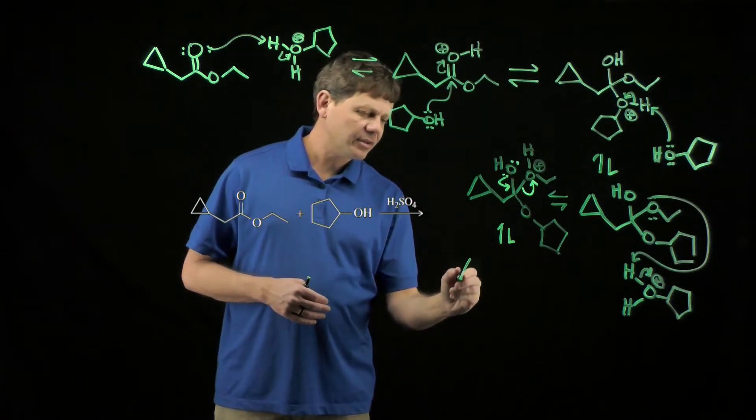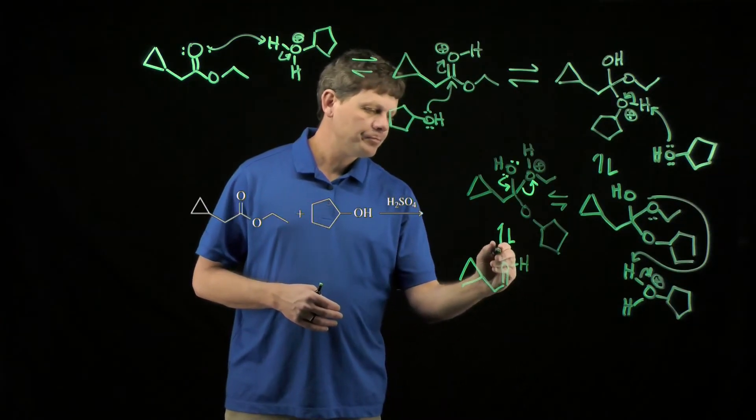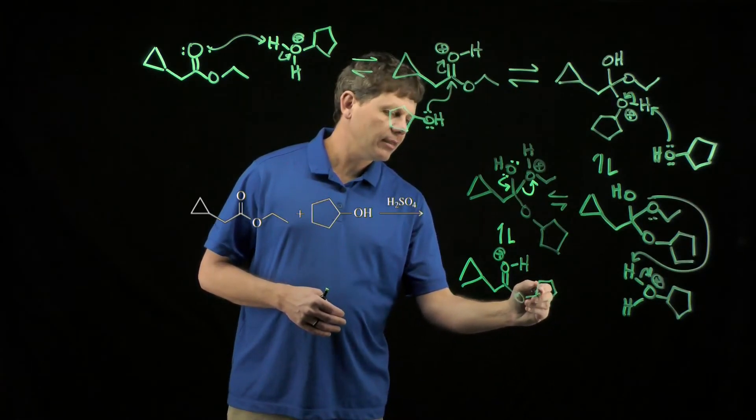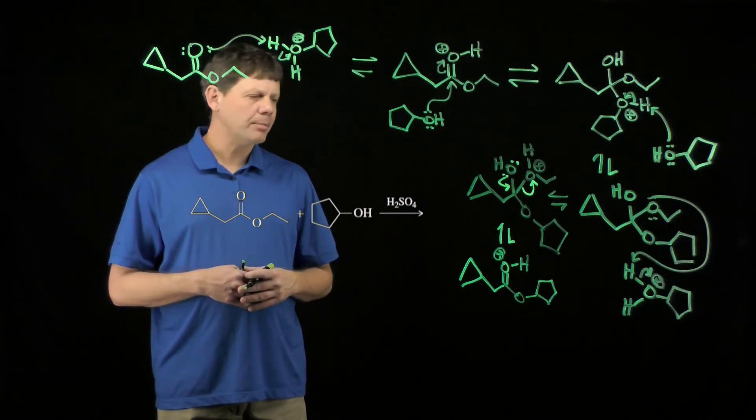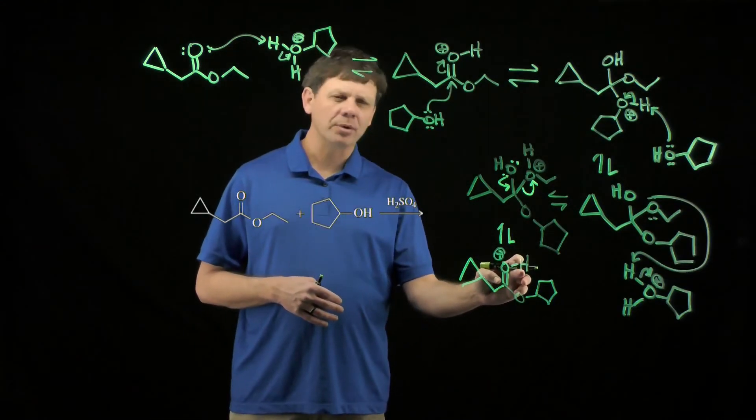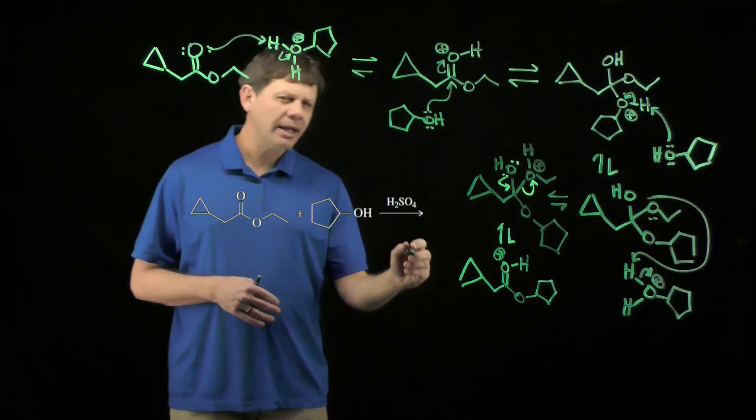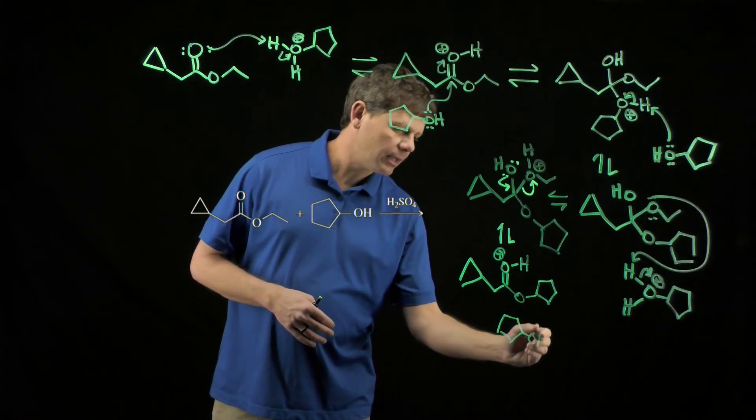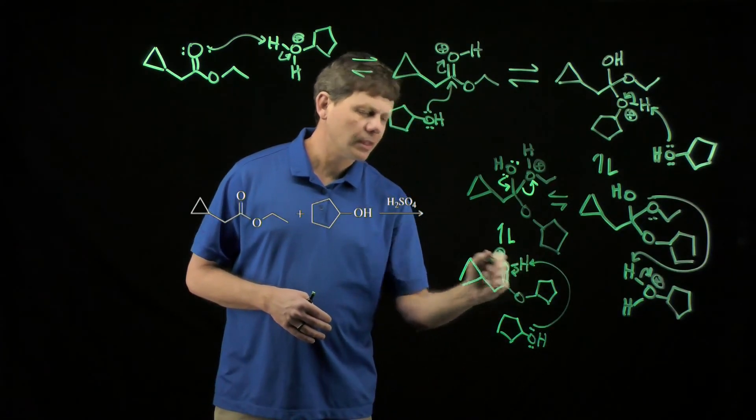That gets us to here, where we now have effectively a protonated ester. And by drawing it in this resonance form, it becomes a little bit more clear what has to happen next. We have to have this proton be removed. That proton can be removed by another molecule of the alcohol coming in and grabbing it like so.